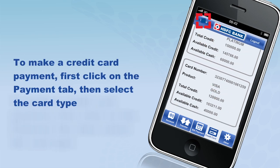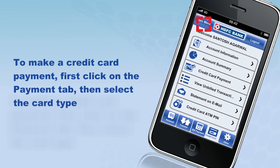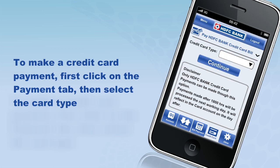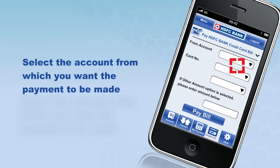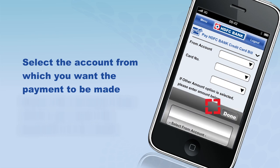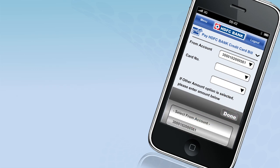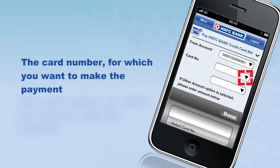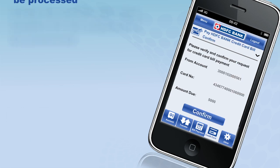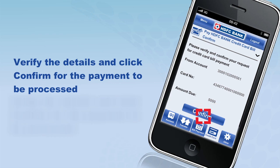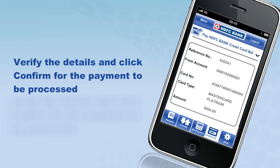To make a credit card payment, first click on the Payment tab, then select the card type, select the account from which you want the payment to be made, and the card number for which you want to make the payment. Enter the amount you want to pay and click Pay Bill. Verify the details and click Confirm for the payment to be processed.